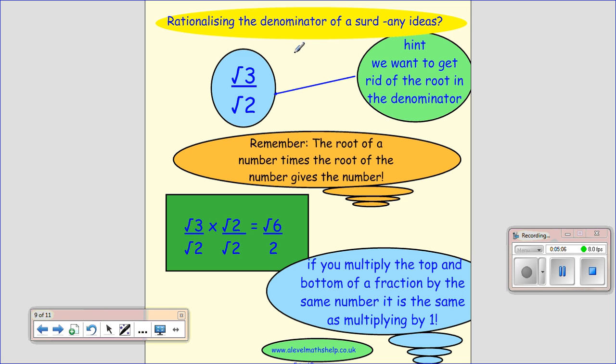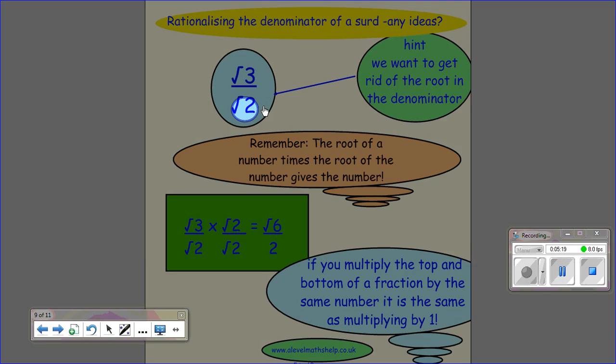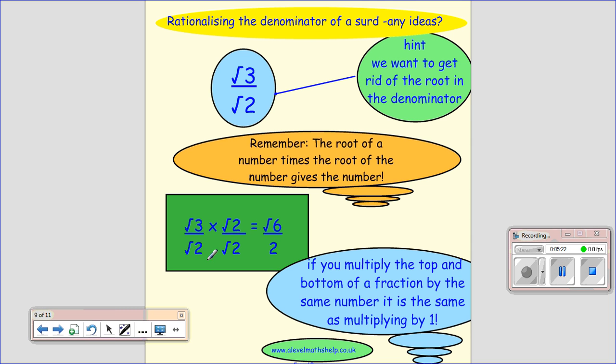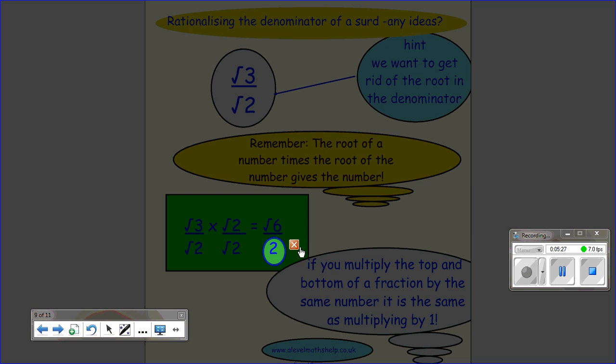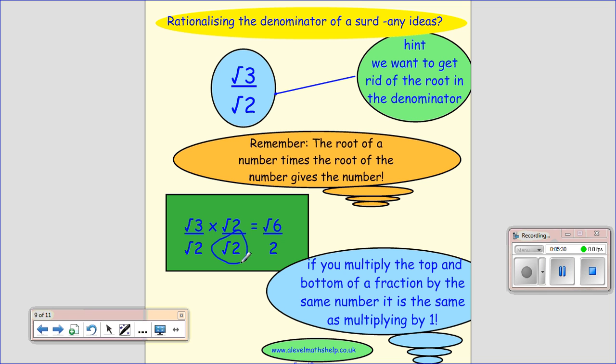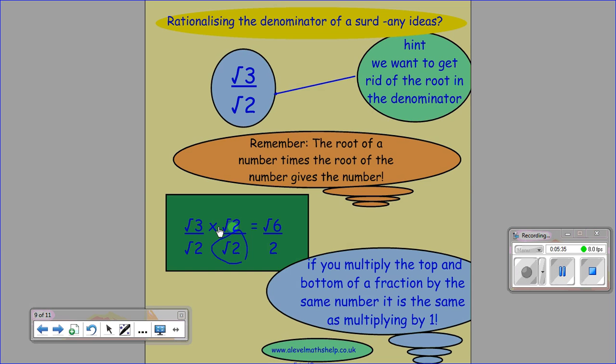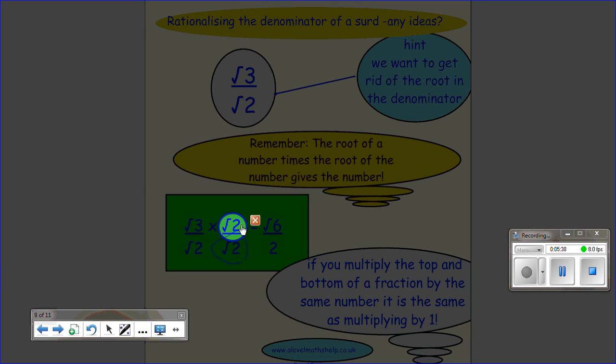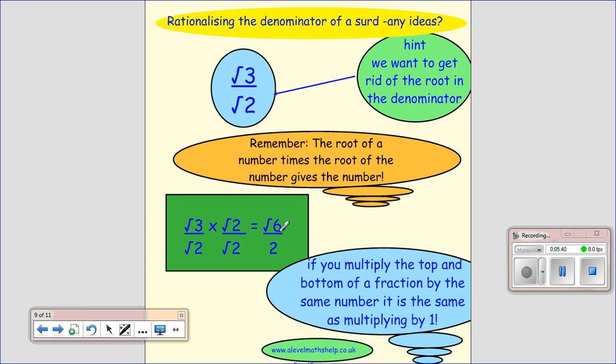Rationalizing the denominator of a surd. What we're trying to do is get rid of the surd in the denominator. We do this by multiplying by what's on the denominator, because the root of the number times the root of the number gives you the number. Now we don't want to change our number, so if we're going to multiply the bottom by root 2 to get rid of the root 2, we must multiply the top by root 2. This is the same as root 3 times root 2, and we can put them together, is root 6.